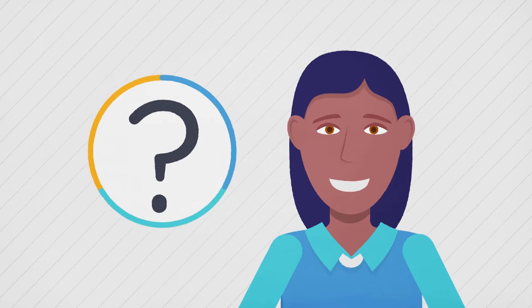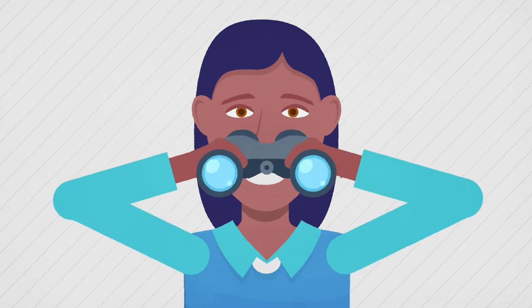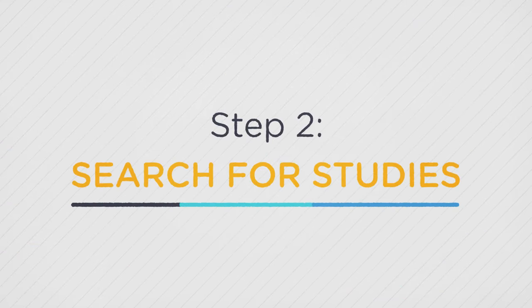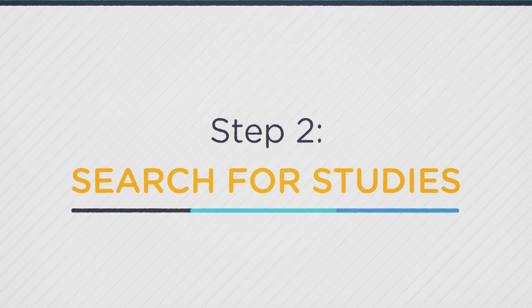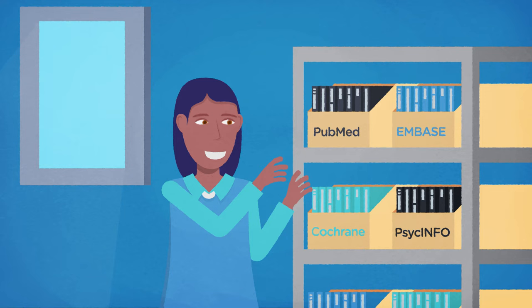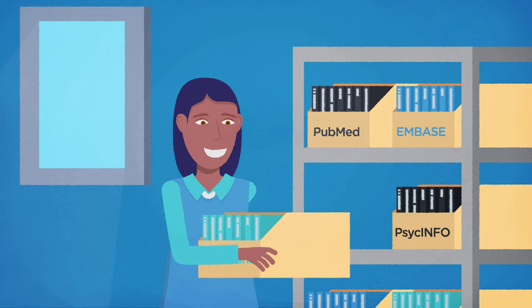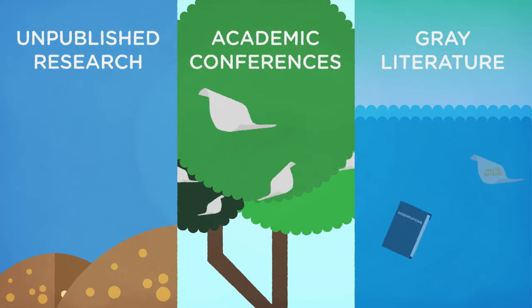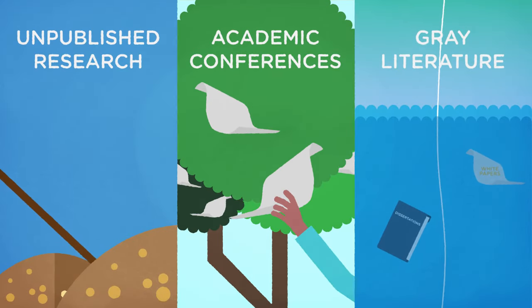Once you've prepared your topic, you can go on to step two, search for studies. Of course, you'll go to electronic databases to find published articles related to your question. But to find all of the evidence related to your questions, you might have to look in some unconventional places.